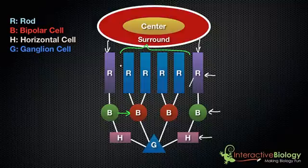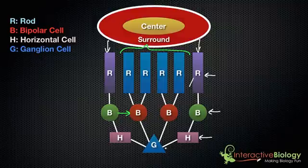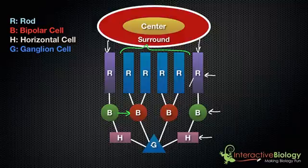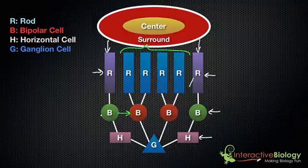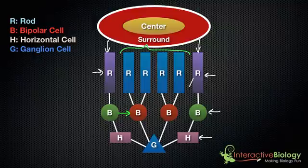So once again, these rods are considered to be in the center of this ganglion cell's receptive field because they're connected directly via a bipolar cell to that ganglion cell. These rods — the one over here and the one over here to the left — are considered to be in the surround of that ganglion cell's receptive field because they don't go directly from the bipolar cell to the ganglion cell; they go via a horizontal cell.